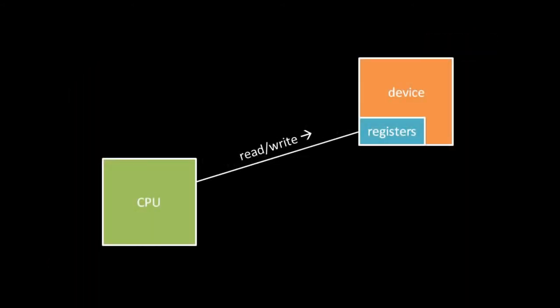For two electronic devices to communicate, there must be some common storage area which they can both read and write. When the CPU and an input-output device communicate, they do so by both reading and writing registers in the device. The relationship, though, is one way — the CPU is in control, reading and writing registers of the device as it pleases, but the device cannot read and write the registers of the CPU. So when a device wishes to send a message to the CPU, it writes to its own registers with the expectation that the CPU will read the data at some point.